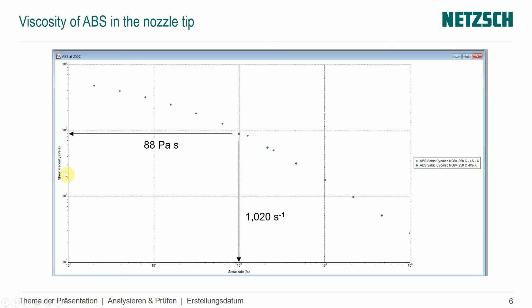So we measured the shear viscosity as a function of shear rate with our Rosand capillary rheometer and plotted the results here in green. You actually see that we used two different measurements to generate that whole shear rate range.